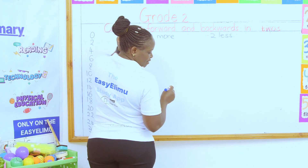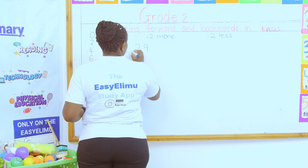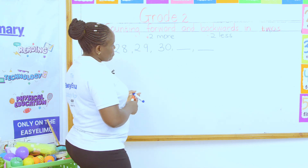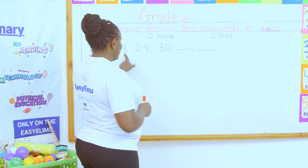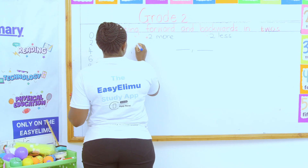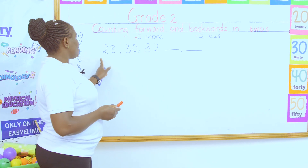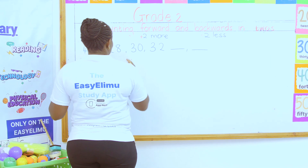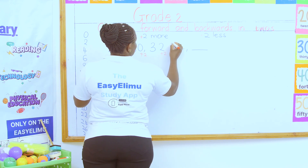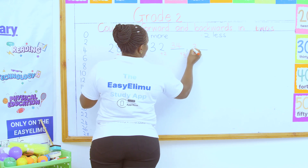So if I've been given a number like twenty-eight, twenty-nine, thirty and I'm asked to fill in the missing numbers — is the number increasing or reducing? The number is increasing. It is twenty-eight, thirty, thirty-two. By how many? Twenty-eight plus two gives me thirty. Thirty plus two gives me thirty-two. Thirty-two plus two gives me thirty-four. And thirty-four plus two gives me thirty-six. I will have counted forward.